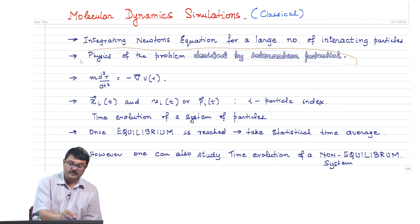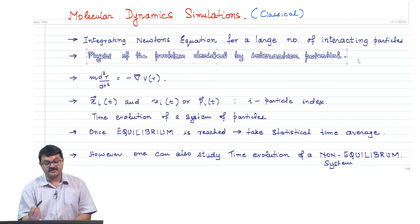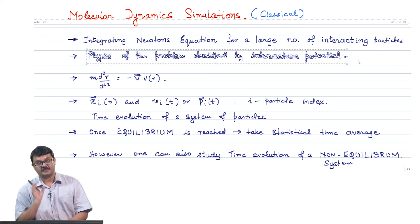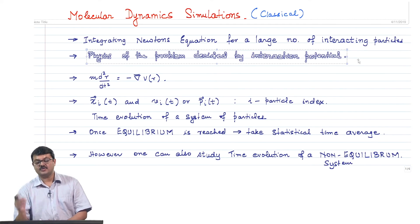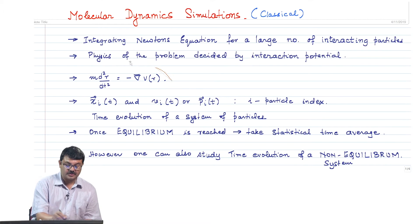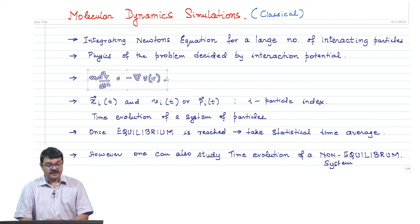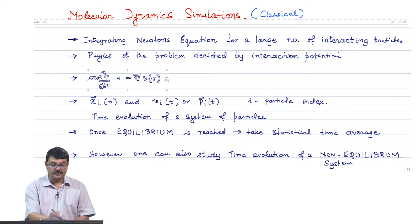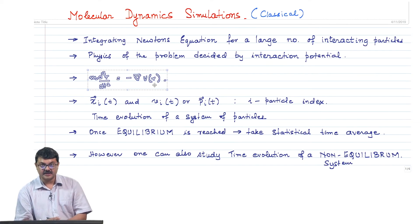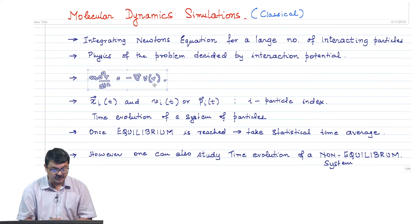The physics of the problem — what you want to study — is decided by the interaction potential. Depending upon what physics you are studying, you choose different expressions of the interaction potential. Newton's equation of motion is nothing but solving m d²r/dt² = −∇V, where V is the interaction potential. You choose different potentials depending upon the physics of the problem.